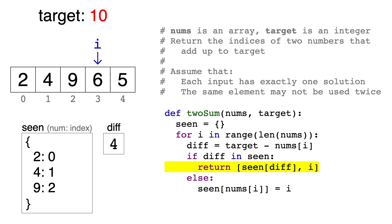We'll return them in an array, and the first element will be the value contained at the key of 4, so that's 1. The second element will be i, which is the index of the current number we're on, so that's 3.